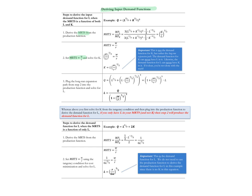If our goal is to solve for labor demand, at this point we'd want to solve for capital. However, if our goal had been instead to solve for capital demand, at this point we would have first solved for labor. Step three is to plug the expression for capital into the production function and then solve for labor — that's how we derive the demand function for labor.